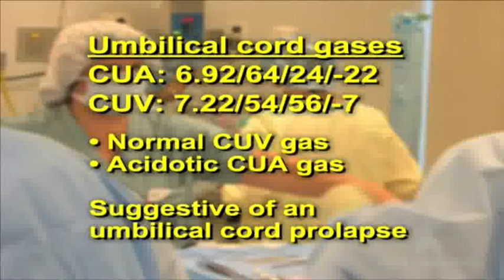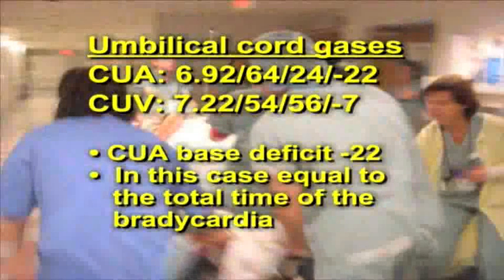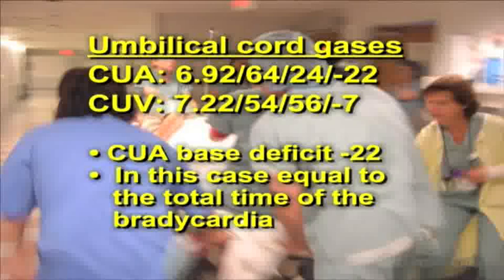Of particular interest in this case is the cord umbilical artery base deficit of minus 22. The base deficit, a derived number that measures the degree of lactic acid in systemic circulation, was equal to, in this case, the total time of the bradycardia, 22 minutes.